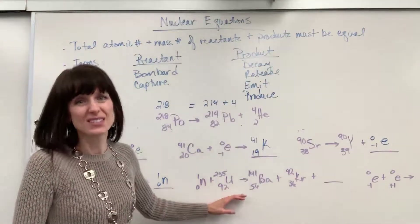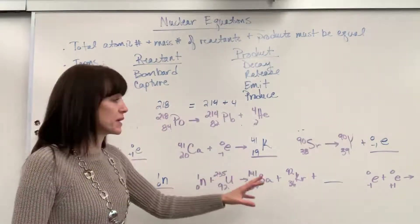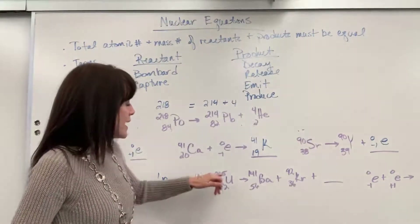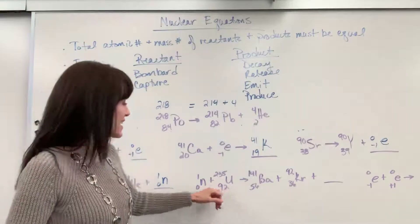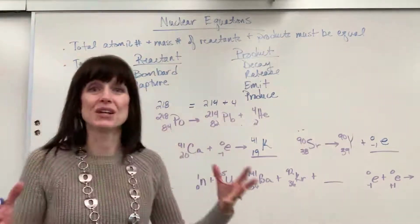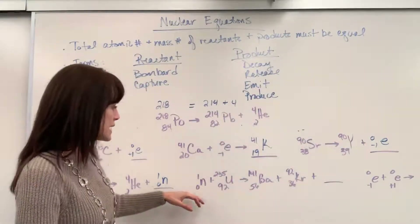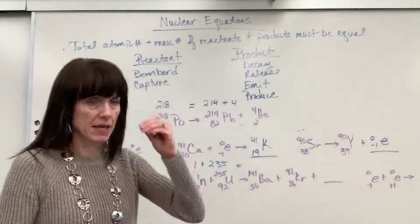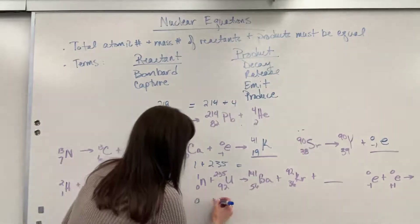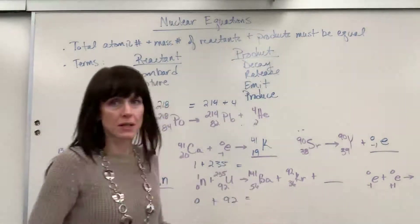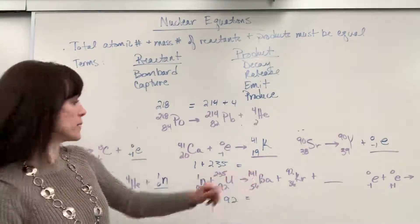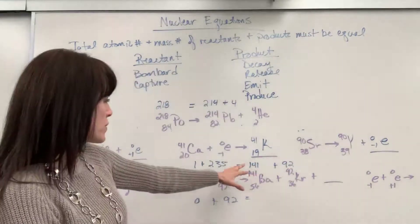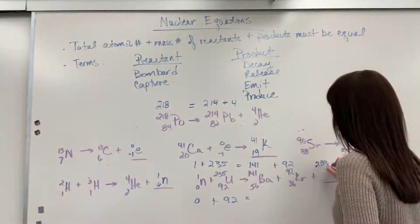Here is our uranium-235 — this is the atomic bomb, the chain reaction. If you take just one neutron and bombard it against a uranium-235, you get that chain reaction. So we have 1 plus 235 equals a total of 236. Down here, 0 plus 92 — so my atomic number has to equal 92. We have 141 plus 92 giving us 233 for the mass numbers on the product side.